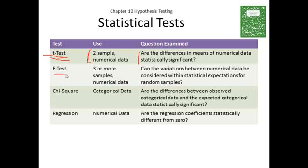We then went on to the F-test. We used that with three or more samples, again with numerical data. And what the F-test really asks is, can the variations between numerical data be considered within statistical expectations for random samples? It's really looking at the variance. That's what an F-test does. It's looking at the variance of one sample and the variance of another sample and the variance between the samples, trying to say does the variance look like it's what I should expect for all these samples? And that's an F-test, again being used with three or more samples and numerical data.